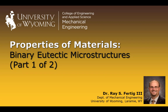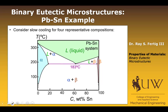Now we're going to talk about the microstructures that arise from binary eutectic systems. We're going to use a lead-tin example — if you're familiar with electronics, you might know this is effectively a solder system. We're going to consider slow cooling of four different representative compositions, and when we work through all of these, we'll have covered every potential case that could arise in a binary eutectic system.